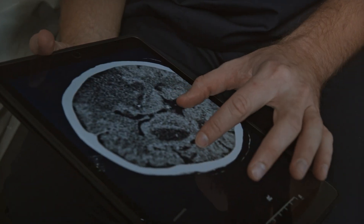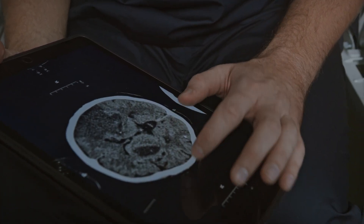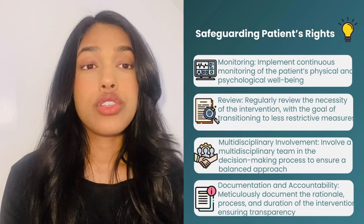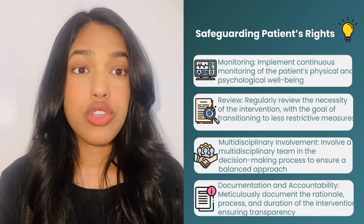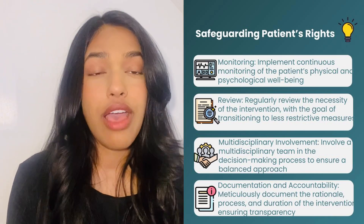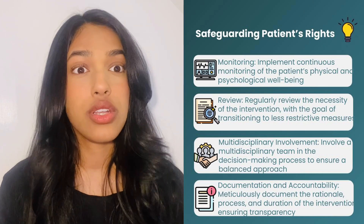In situations where it's not possible to include the patient in the decision-making process, it's important to involve family or others involved in the patient's life. Thinking about beneficence — acting in the best interests of the patient — the primary goal of using restraints or seclusion should be to protect the patient from immediate harm. They should only be used when absolutely necessary and when less restrictive alternatives, such as verbal de-escalation, have been exhausted.